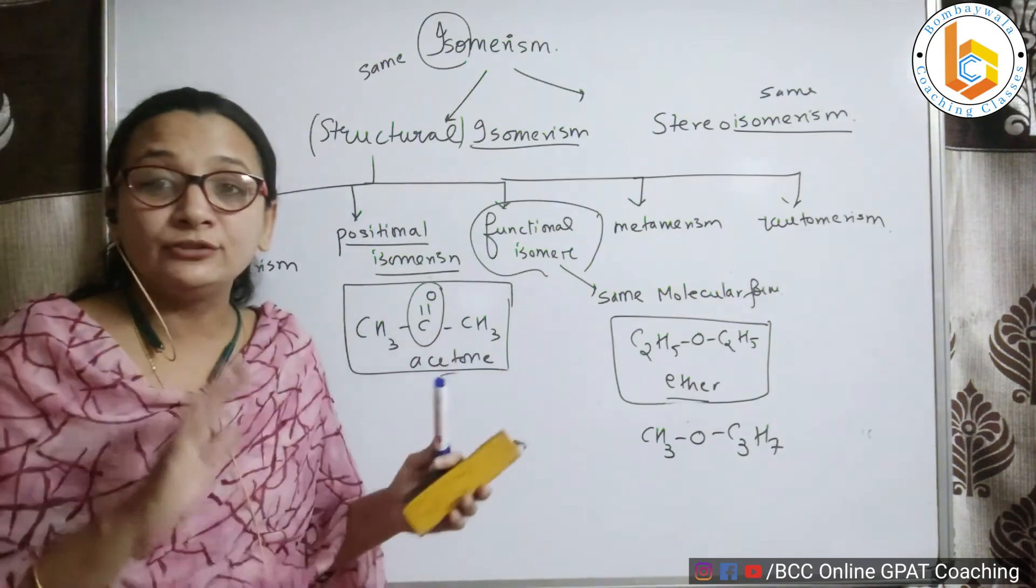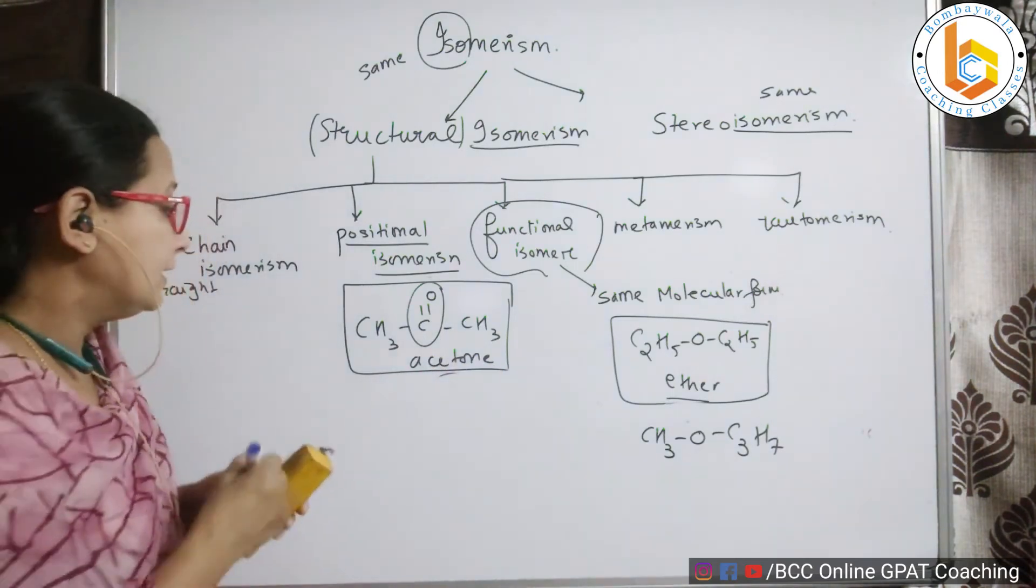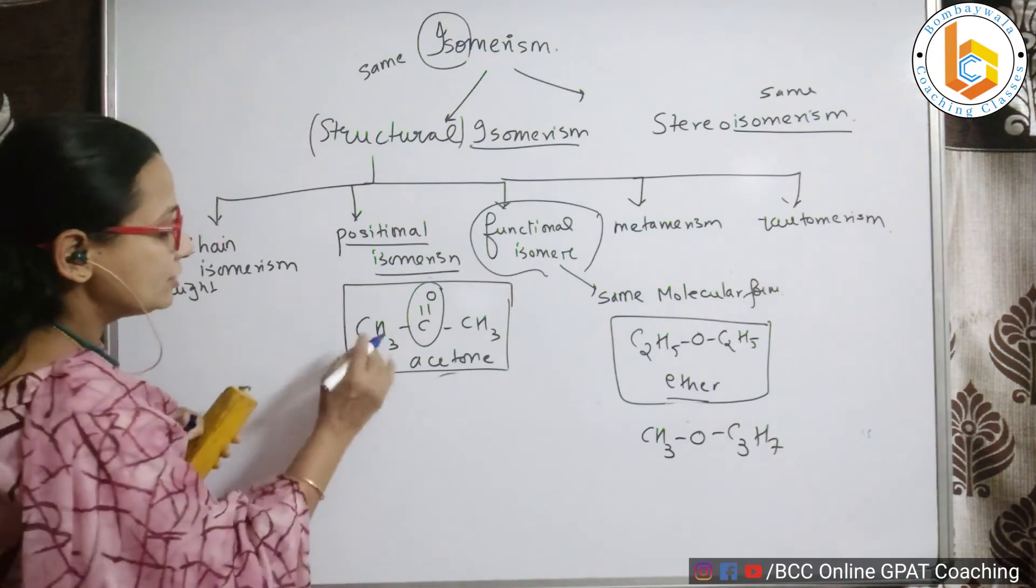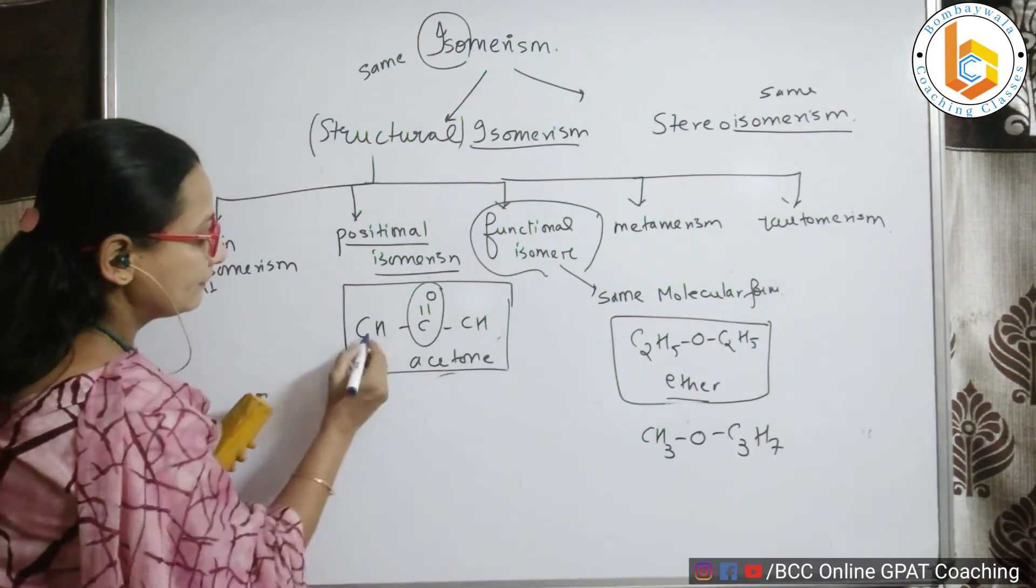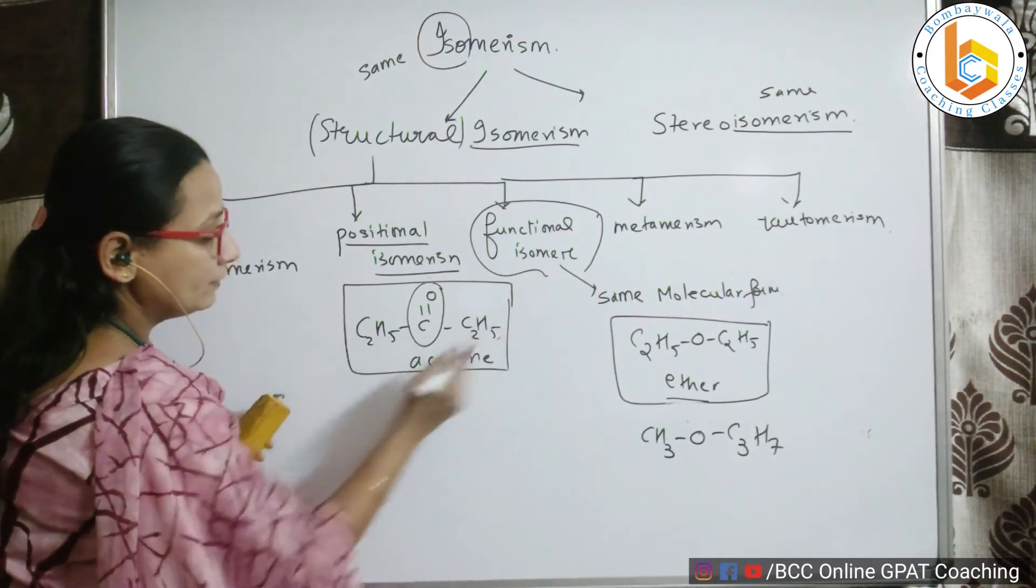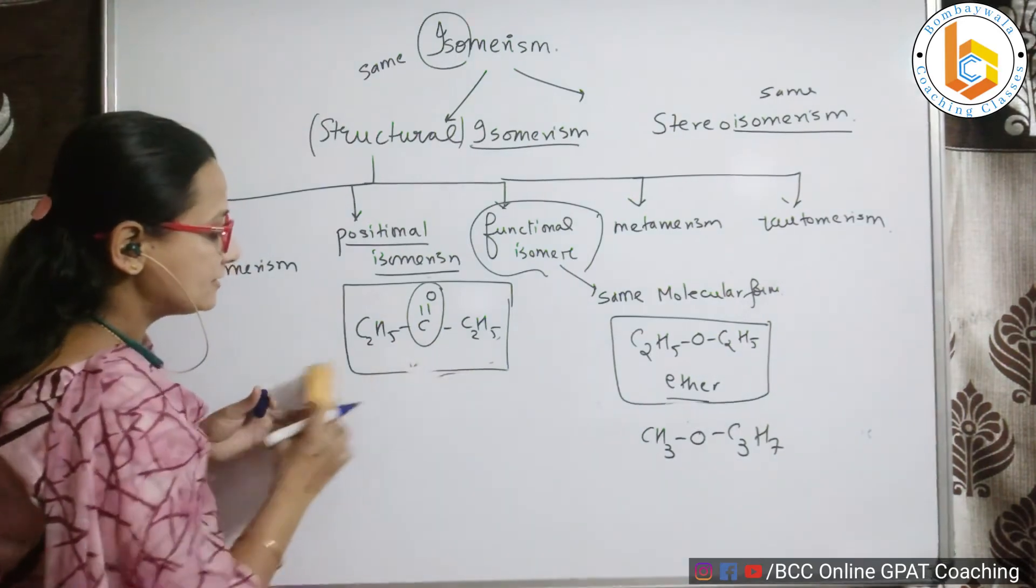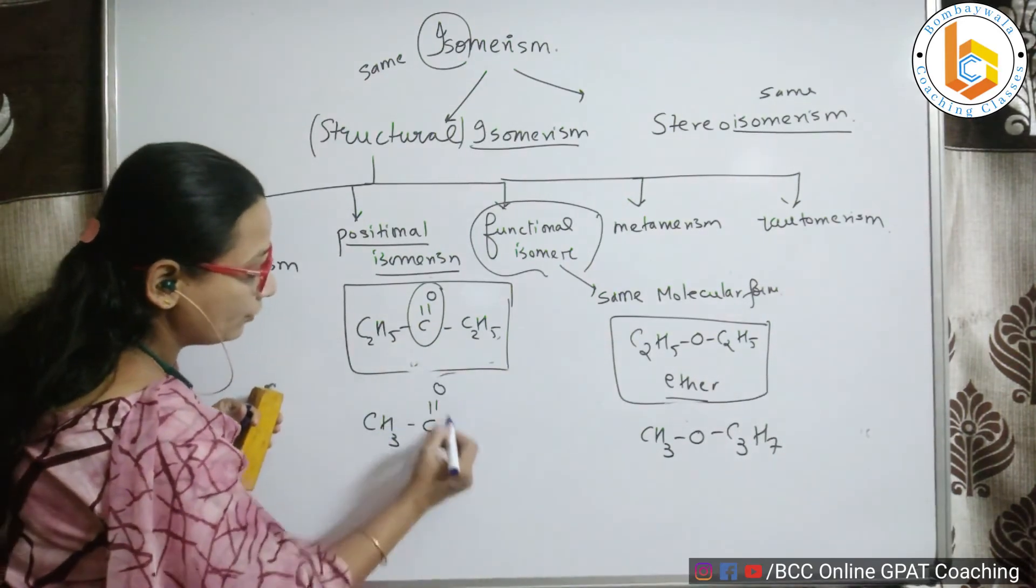For example, I took the simplest example acetone. Acetone cannot show this isomerism. Instead, if I would have taken C2H5 here, right, then I could have again seen something like this: CH3-C=O-C3H7.